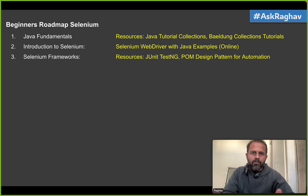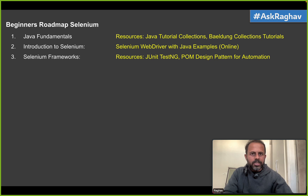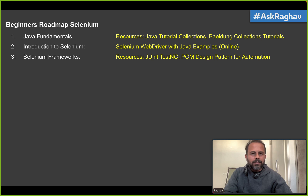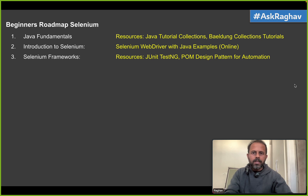Then ultimately we have to design and develop frameworks with Selenium. A framework is like a platform where we have all the things needed for automation testing — our scripts, data, extensions, and libraries — all available in a structured way so that we can use, reuse, and maintain it. Here you can search and learn about JUnit, TestNG, and the Page Object Model design pattern.